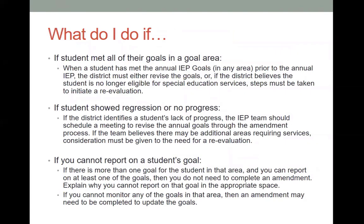What do you do if a student met all the goals in their area? If a student met all of their annual goals in a certain area, such as math, you do need to revise the goals. If the team believes they're no longer eligible, steps must be taken to initiate a reevaluation. If the student shows regression or no progress, the team needs to schedule a meeting so those goals can be revised. If you can't report on a student's goal and there's more than one goal in that area, you can continue. But if there's only one goal and you can't report on it, you're essentially saying you're not meeting the student's needs — you need to complete an amendment if that happens.